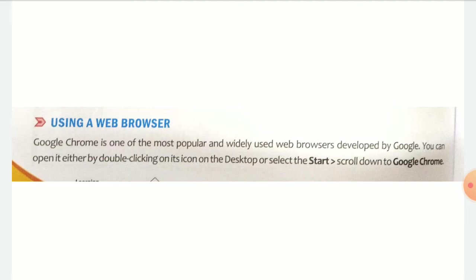You can open Google Chrome by double-clicking on its icon on the desktop. If you work on a desktop computer, you will get this icon on the desktop. You can double-click and open it, or you can click on the Start button and scroll to Google Chrome. Once you get it, click on it and Google Chrome will be opened.